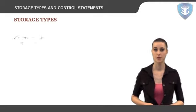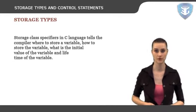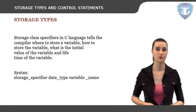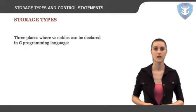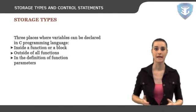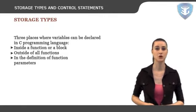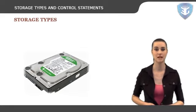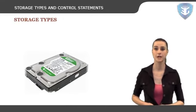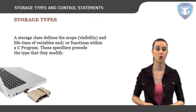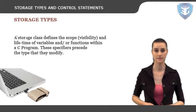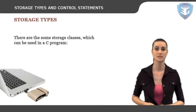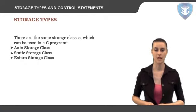Storage class specifiers in C language tell the compiler where to store a variable, how to store the variable, what is the initial value of the variable, and the lifetime of the variable. There are three places where variables can be declared: inside a function or a block, called local variables; outside of all functions, called global variables; and in the definition of function parameters, called formal parameters. A storage class defines the scope, visibility, and lifetime of variables within a C program. There are some storage classes used in C: auto, static, and extern storage class.